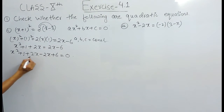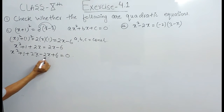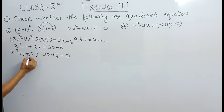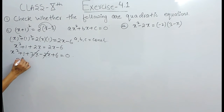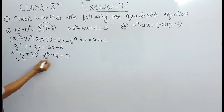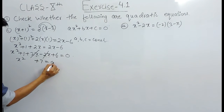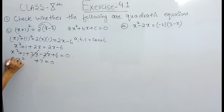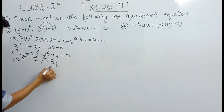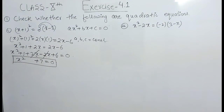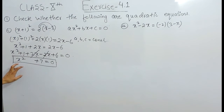The 2x and minus 2x are like terms, so they cancel out. Our equation becomes x squared and 6 plus 1 is 7, equals 0. So this simplifies to x squared plus 7 equals 0.